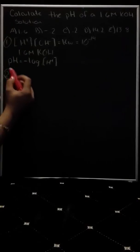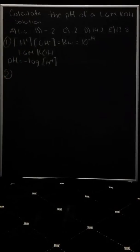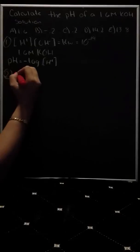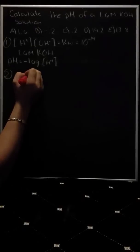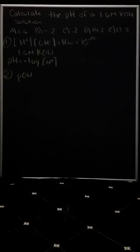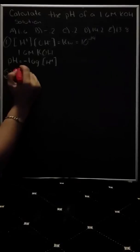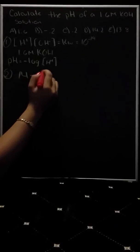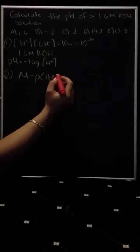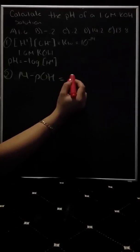The second way is the easiest way. You can find the POH and then subtract it from 14. So it would be 14 minus POH is equal to pH.